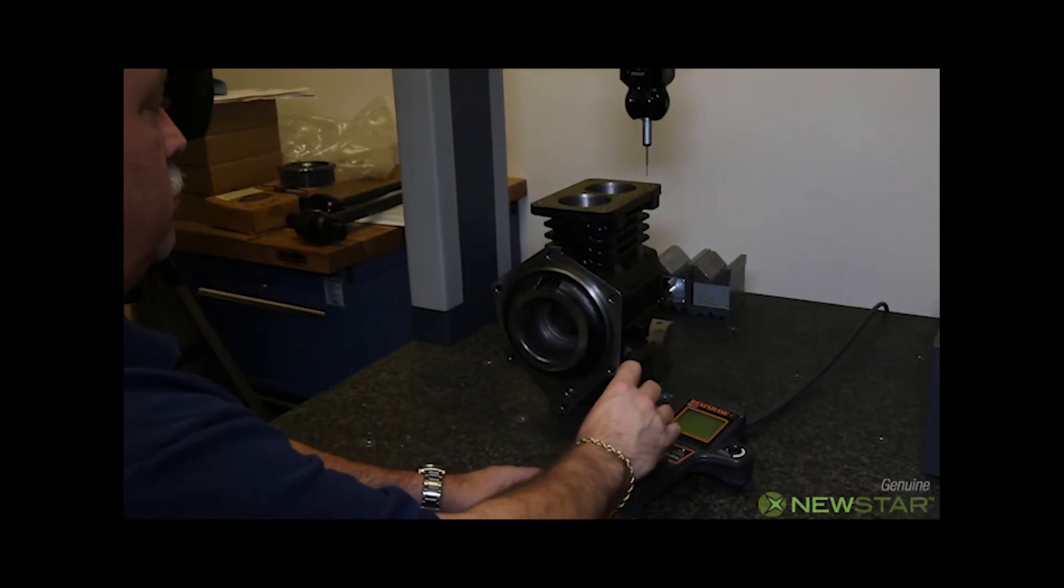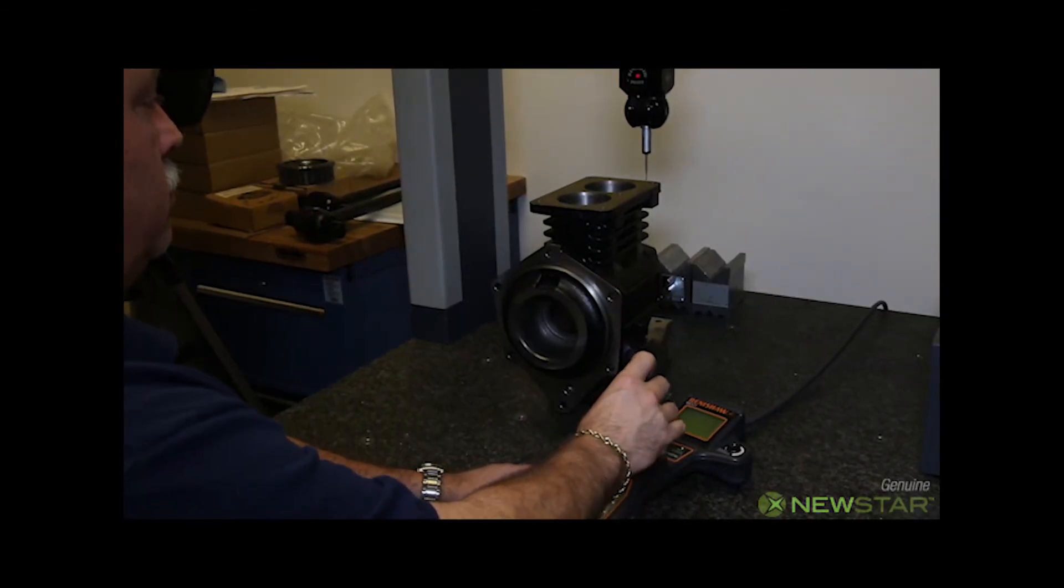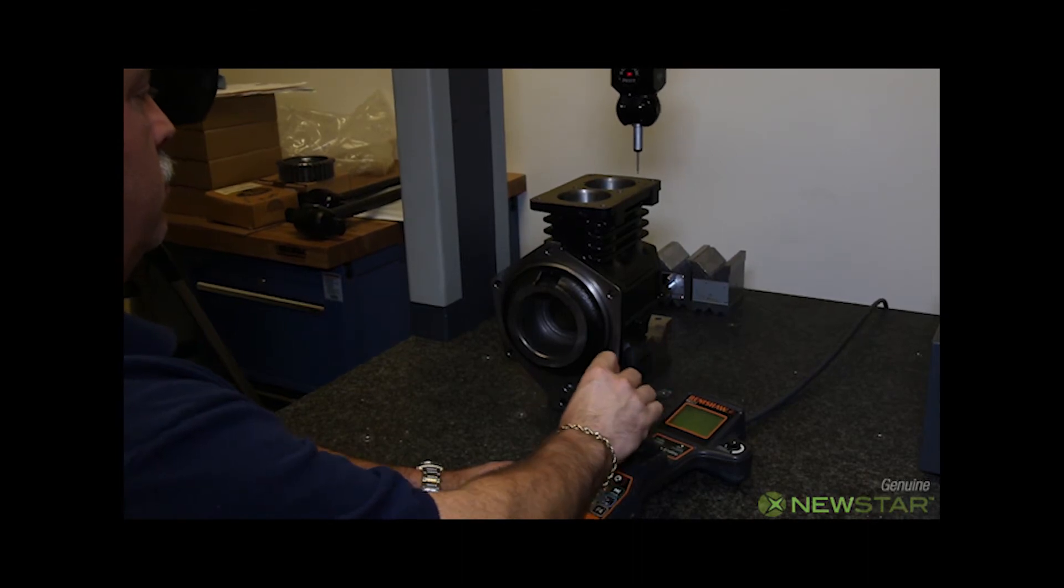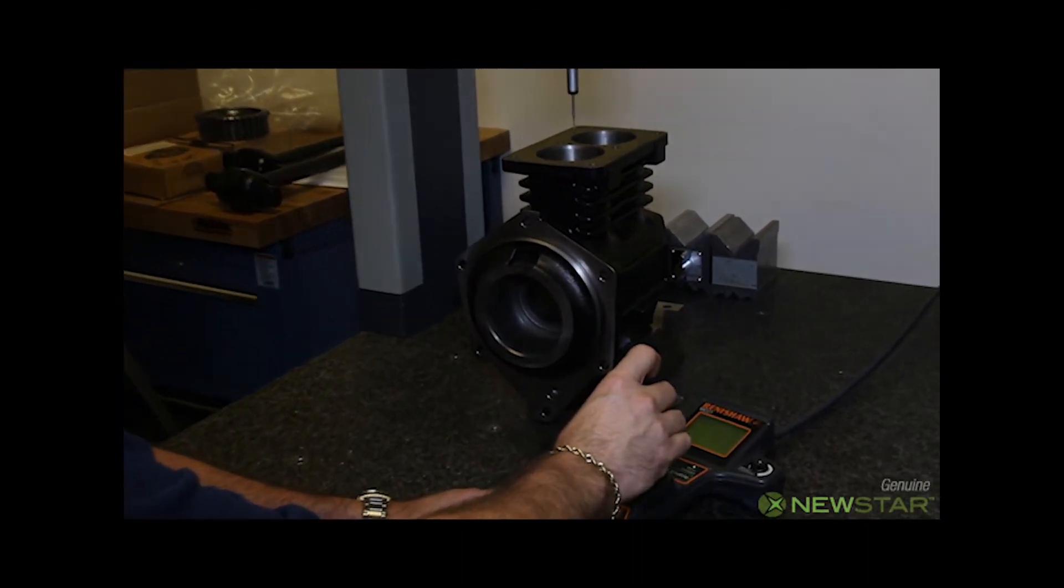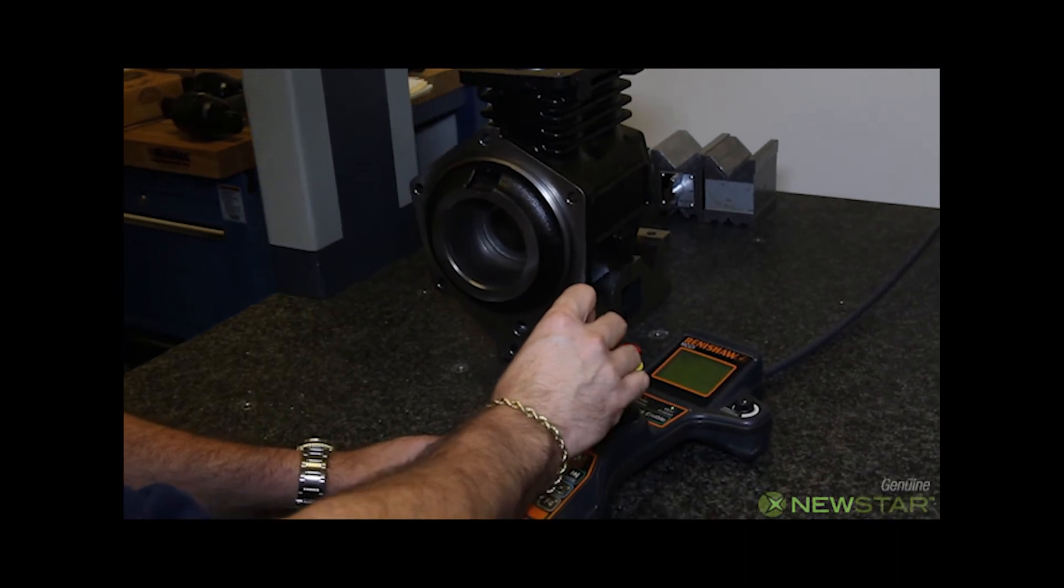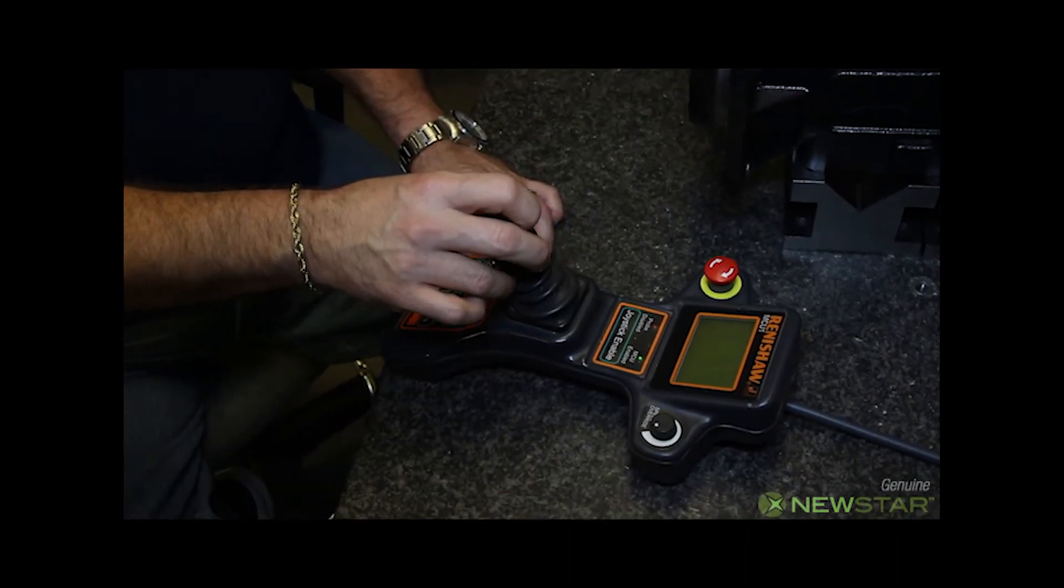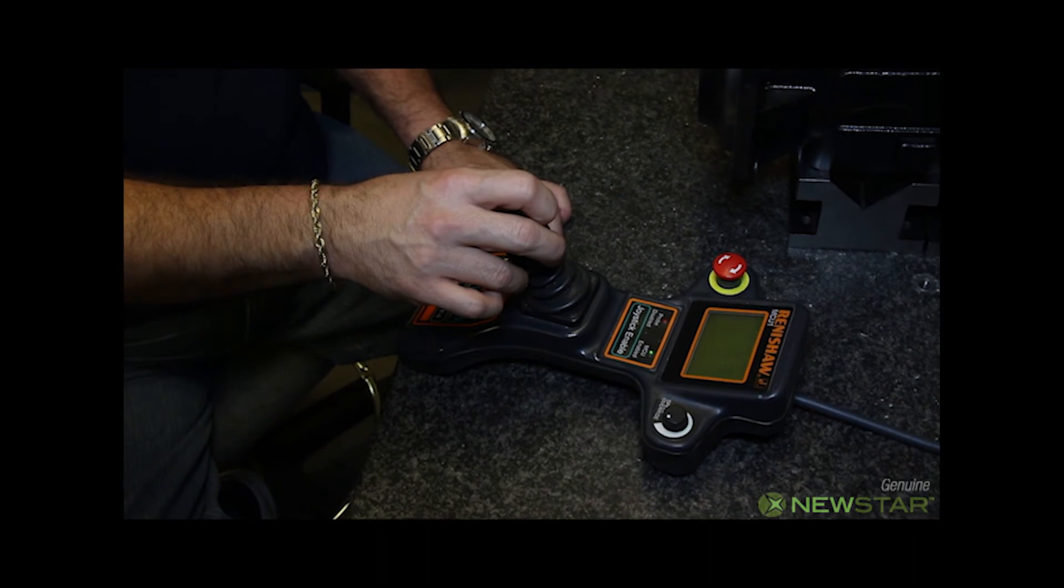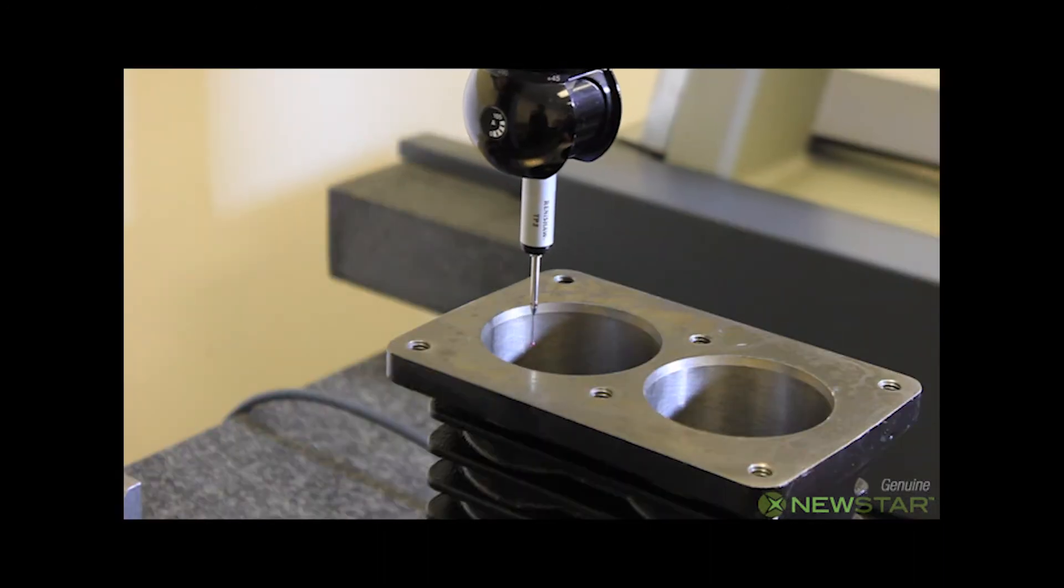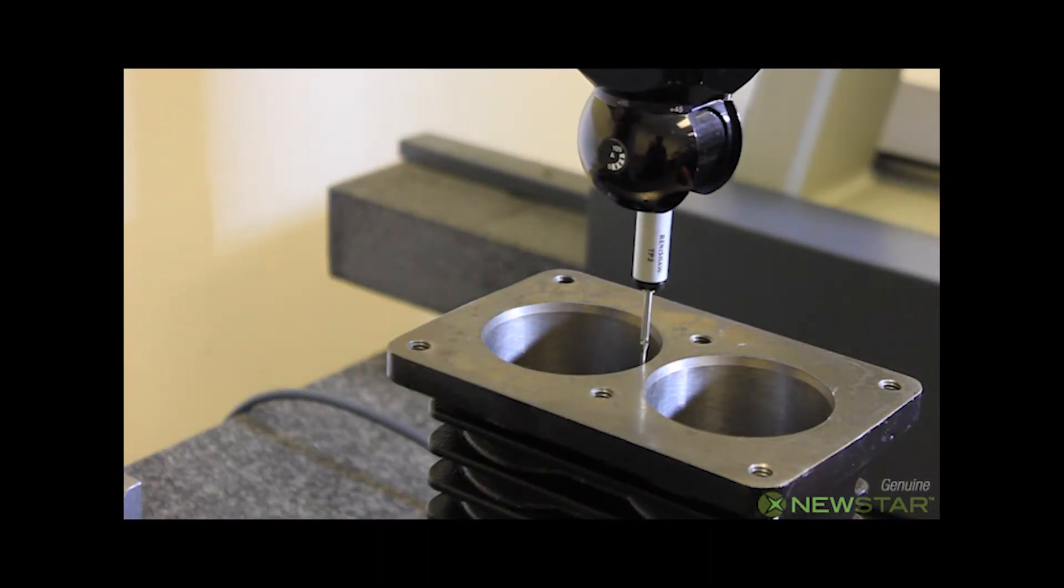We're using a computerized CMM or coordinate measuring machine to physically measure points on the block like bolt holes, cylinder bore dimensions, case flange hub dimensions, and flange bolt hole locations and sizes. All these measurements are fed into the computer and a print is then made.